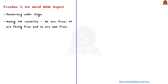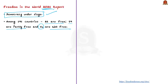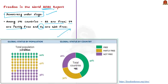The 2021 report says that across the world democracy is under siege. Among the 195 countries assessed, 82 are free, 59 are partly free, and 54 are not free. The report provides the overall status of the global population, with green representing the free category and purple representing not free.